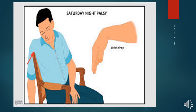The effects include loss of extension of the elbow due to paralysis of triceps, loss of extension of the forearm, and the clinical feature known as wrist drop. Wrist drop occurs due to paralysis of extensors of the wrist supplied by the posterior interosseous branch of the radial nerve, with unopposed action of flexors keeping the wrist in a flexed position. Supination is also not possible due to paralysis of the supinator.